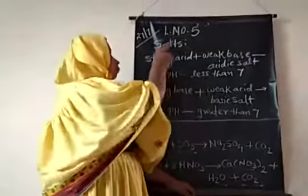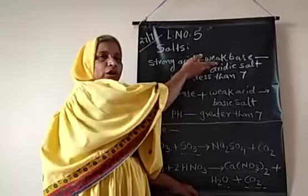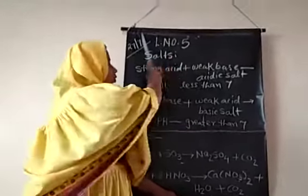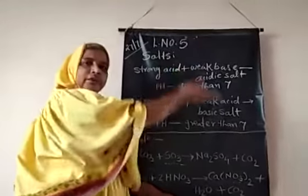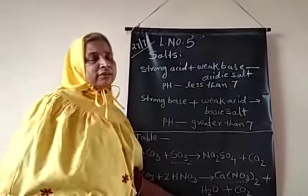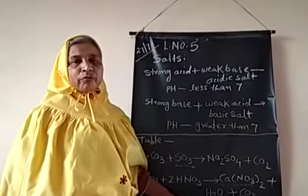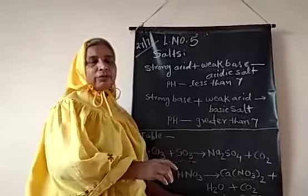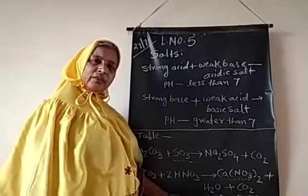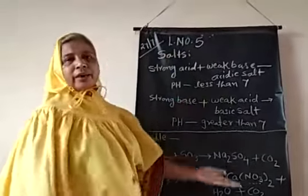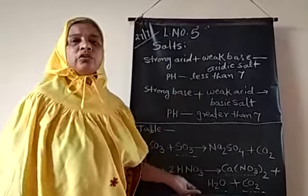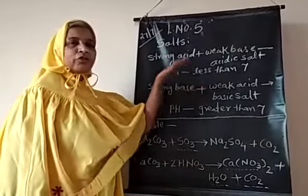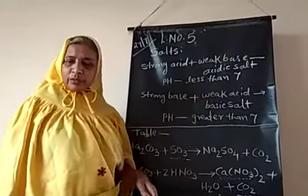When both the acid and base are strong, neutral salts are formed, and their pH value is exactly 7. In this way, salt is divided into three types: acidic salt, basic salt, and neutral salt.